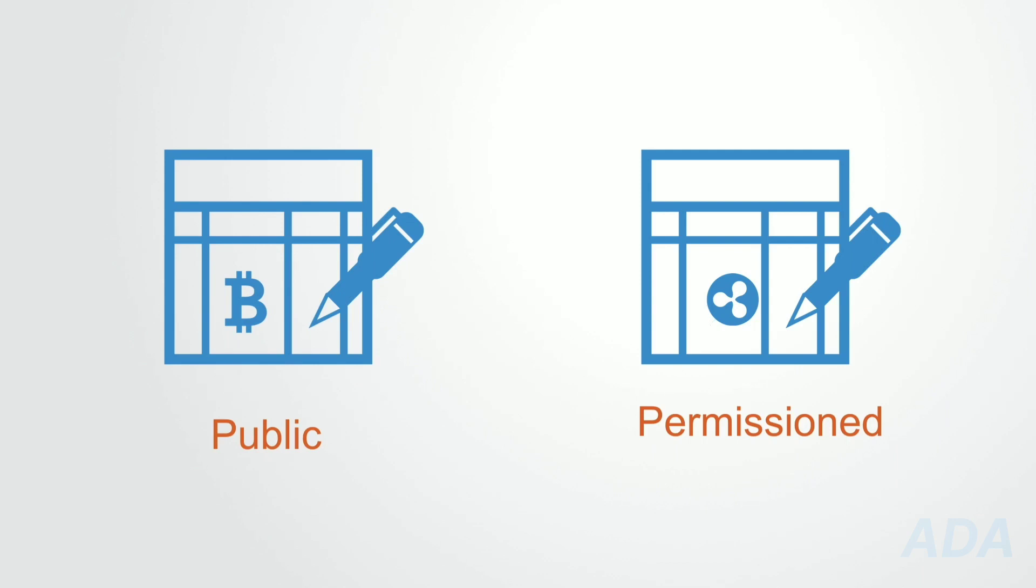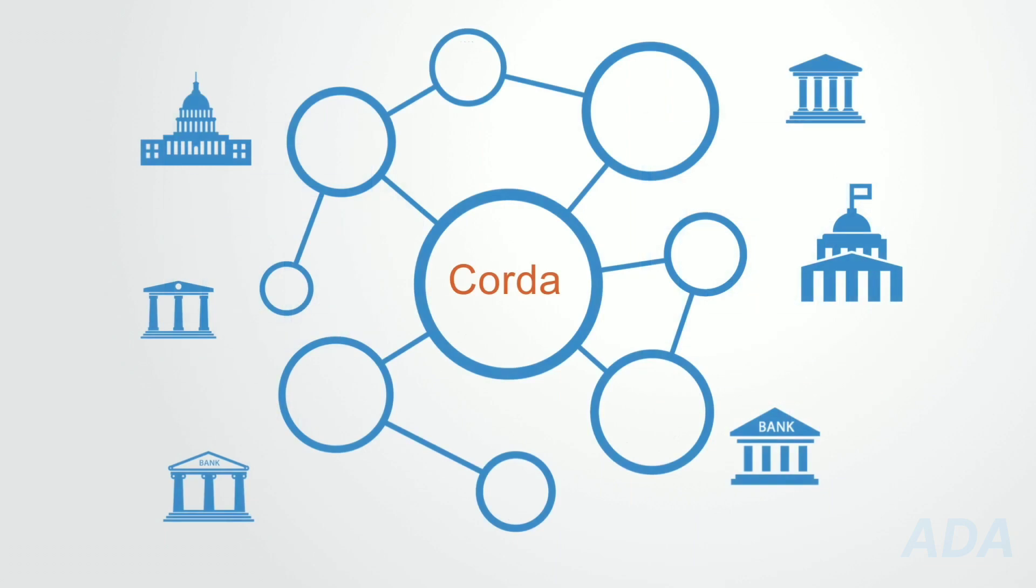For instance, in the Corda DLT platform, which is a consortium of more than 70 of the world's largest financial institutions, the sharing of individual ledger data is limited to parties with a legitimate need to know, which is not the case for public platforms.